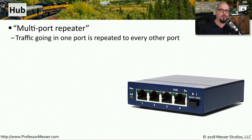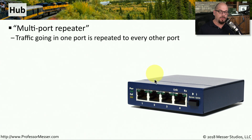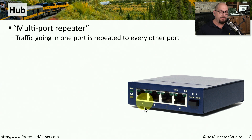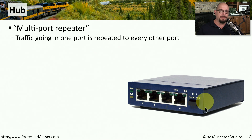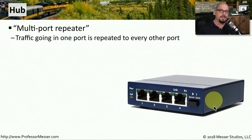In the early days of networking, if you had to connect a lot of different devices together, you might use something like a hub. This is an ethernet hub — a very small one with only four interfaces, but hubs could have tens or even hundreds of interfaces. Information sent to one interface on a hub is automatically repeated to every other interface. This is similar to a repeater, except with a hub you're repeating out multiple interfaces simultaneously.